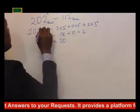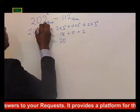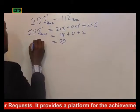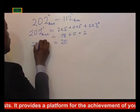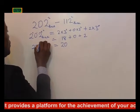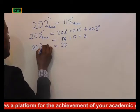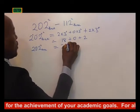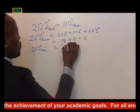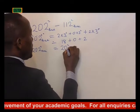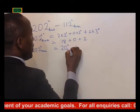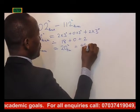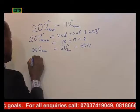Remember that this one is squared. So 202 base 3 equals 20 in base 10, and 20 squared equals 400. Then we move on to 112 base 3.